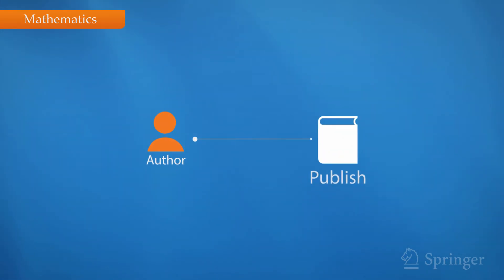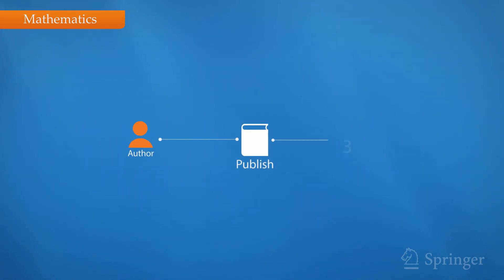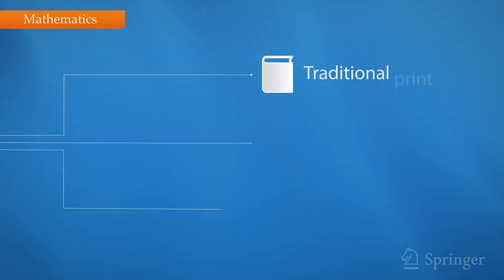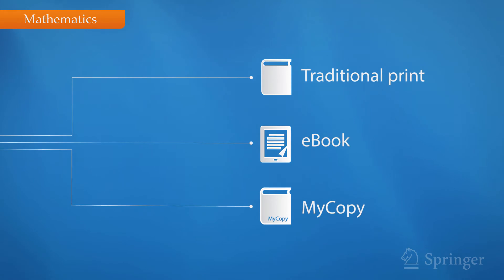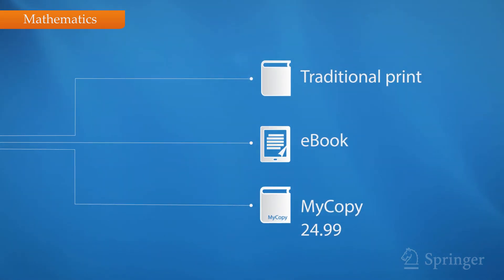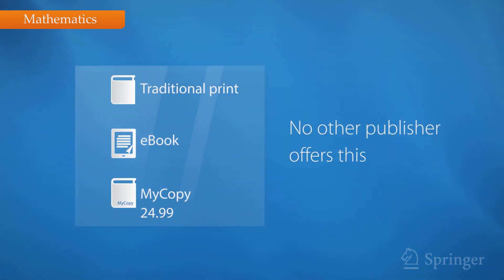When you publish with us, we make your book available in three formats: a traditional print copy, an e-book, as well as MyCopy, a printed softcover available at an incredible price. No other publisher offers this.